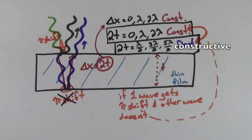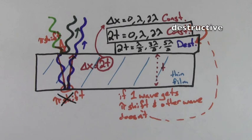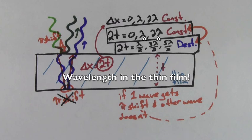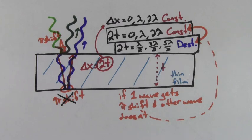In other words, 2t equals half-integer wavelengths gives constructive interference, and 2t equals a whole number of wavelengths gives destructive interference. Be careful: the wavelength in these thin film interference equations always refers to the wavelength the light has while it's inside the thin film. If you're given the wavelength in air, just divide by n, the index of refraction of the thin film.